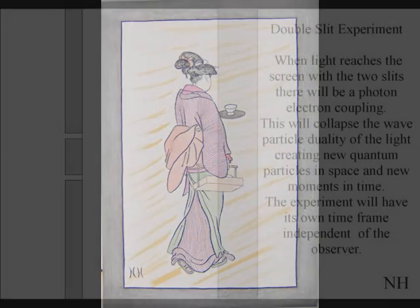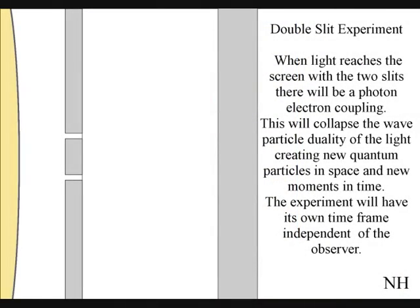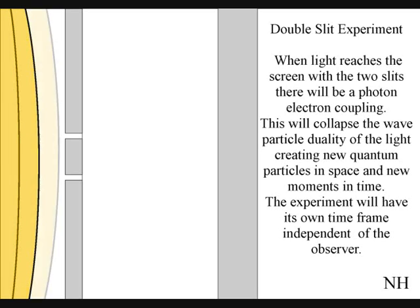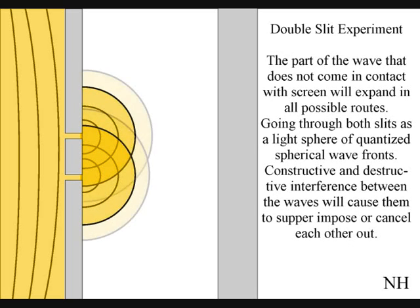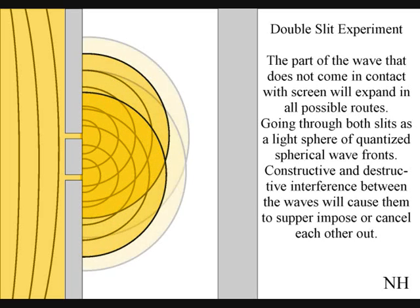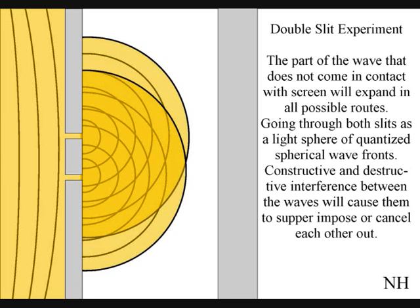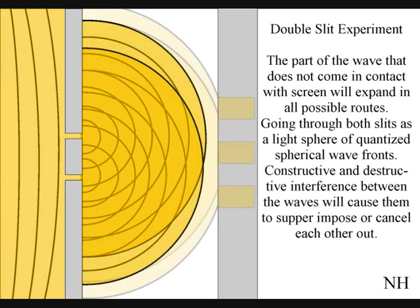The best way to see this happen directly with light is in the two-slit experiment. When the light reaches the screen with the two slits, the photons will react with the electrons of the screen. This will collapse the wave-particle duality of the light, creating new quantum particles in space and new moments in time. The part of the wave that does not come in contact with the screen will go through both slits. Interference between the waves will cause them to superimpose or cancel each other out, and when this wavefunction comes in contact with the screen, it will collapse, creating moments in time and an interference pattern.